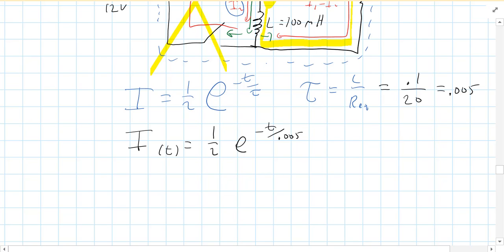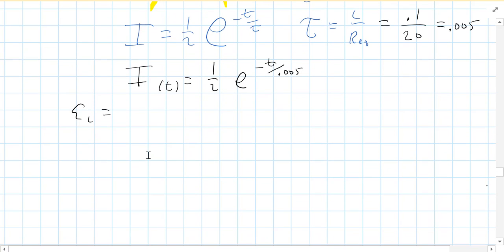Now, so that's current, and that decays to zero. What's the EMF of the inductor? Well, there's actually two ways to do this. I'll show you both because they're both pretty quick. One way is to say, well, E is negative L di dt, which is negative 0.1 times the derivative of this current. So what's the derivative of that function?